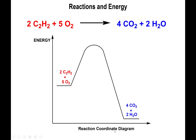On the y-axis you have the energy associated with the reactants or the products. In this particular case, the products are at a lower energy than the reactants, which means you are dealing with products that are more stable than the reactants you start with.